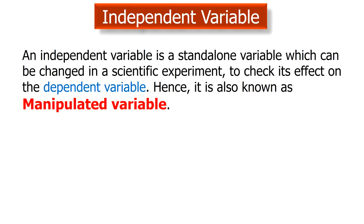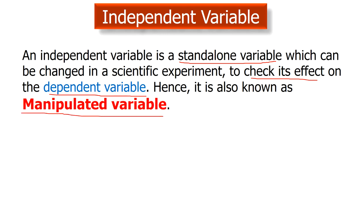An independent variable is a standalone variable, meaning it is a variable whose change is not affected by any other variable in an experiment. The independent variable is either changed or controlled in a scientific experiment by the experimenter, or it changes on its own due to circumstances, and the experimenter checks its effect on the dependent variable. An independent variable reflects the cause or reason for an outcome. Further, as it indicates the quantity which is being manipulated in an experiment, it is also called a manipulated variable.